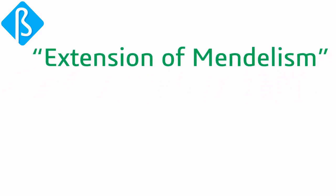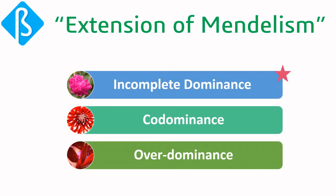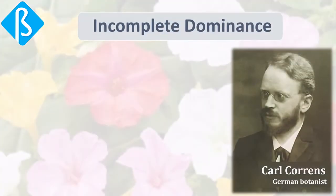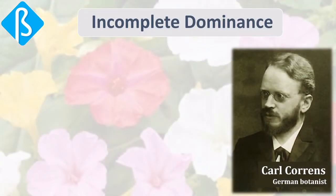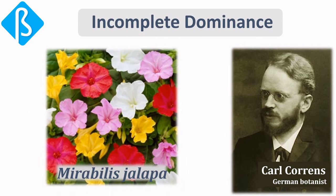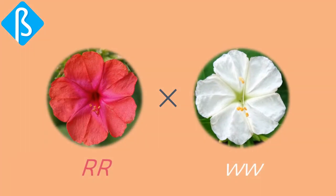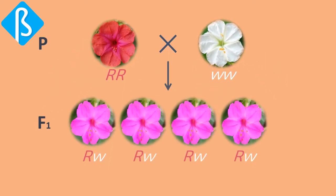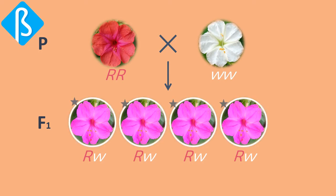Apart from complete dominance, there are three more types of dominance: incomplete dominance, co-dominance, and over-dominance. Let's start with incomplete dominance. In 1905, German botanist Carl Correns was doing experiments with Mirabilis jalapa, commonly called four o'clock because its flowers open in the late afternoon. He crossed a homozygous red flower plant with a homozygous white flower plant, and interestingly, the offspring had neither red nor white flowers — rather, they showed pink flowers, an intermediate phenotype.